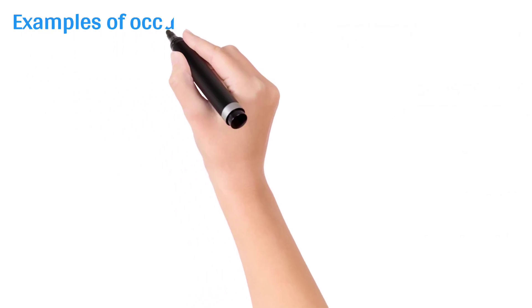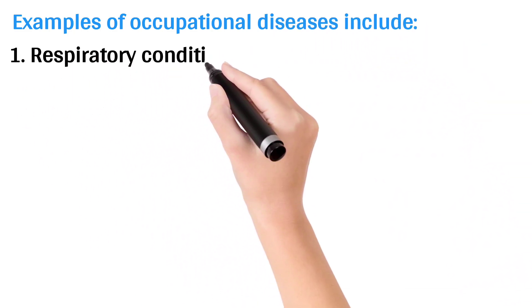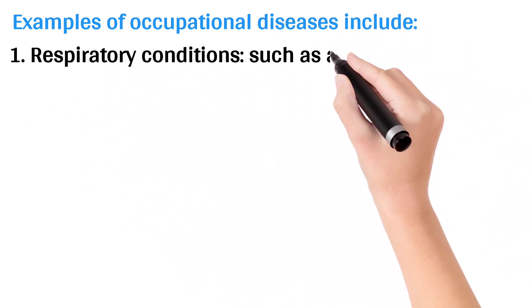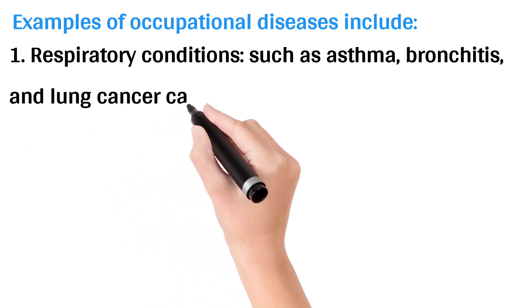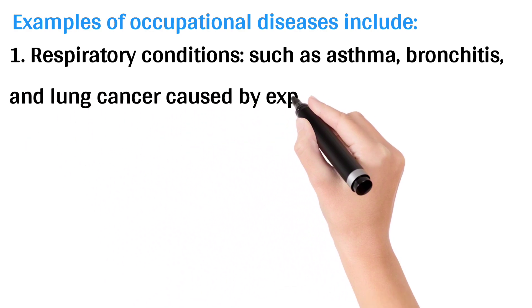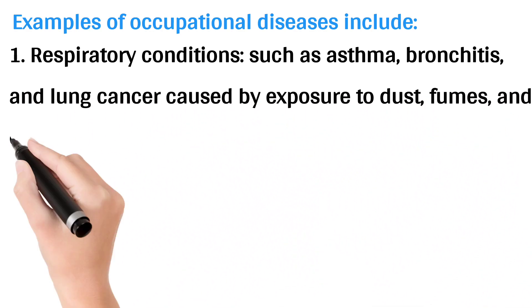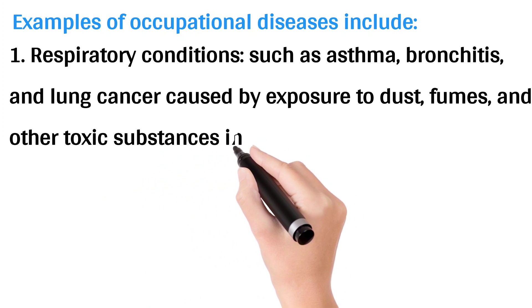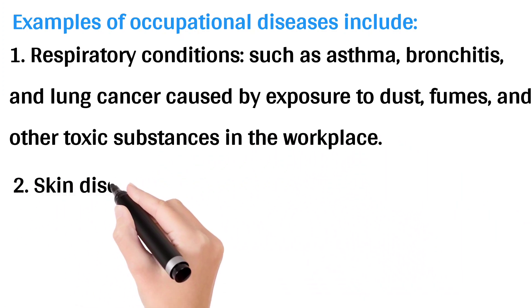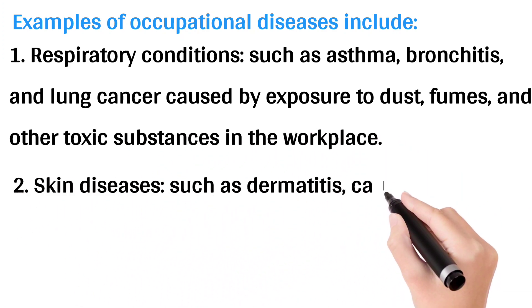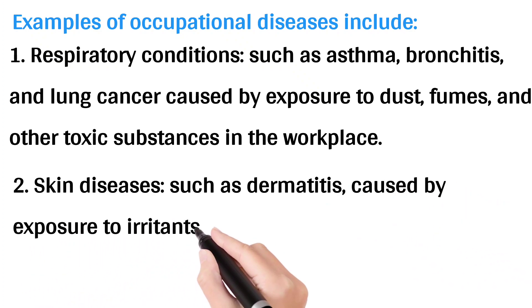Examples of occupational diseases include: 1. Respiratory conditions, such as asthma, bronchitis, and lung cancer caused by exposure to dust, fumes, and other toxic substances in the workplace. 2. Skin diseases, such as dermatitis caused by exposure to irritants and allergens in the workplace.